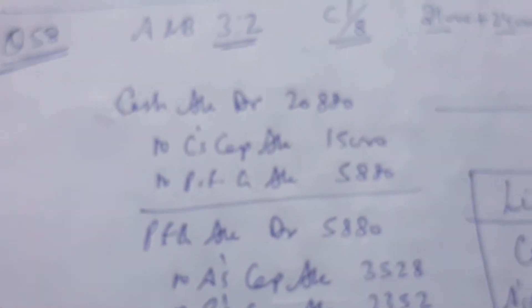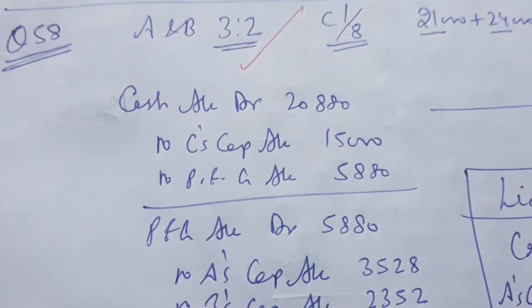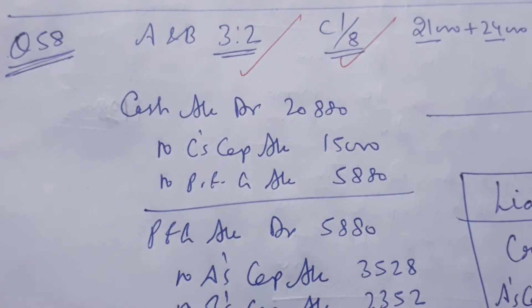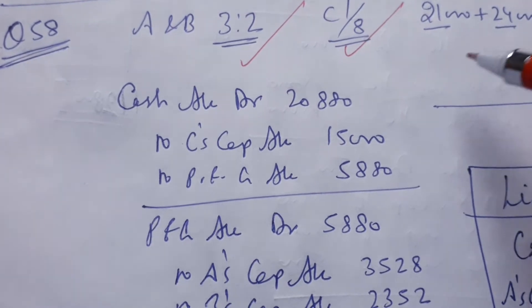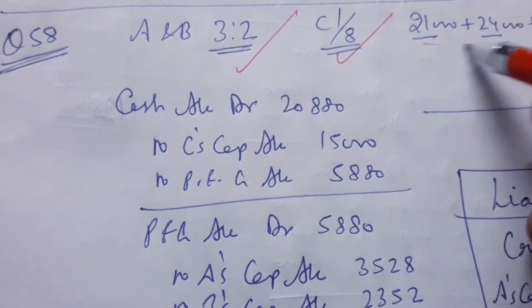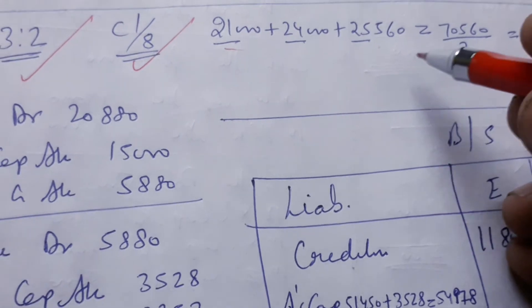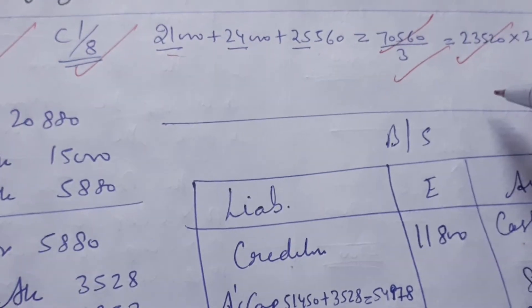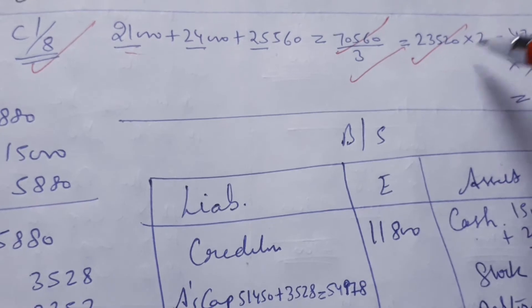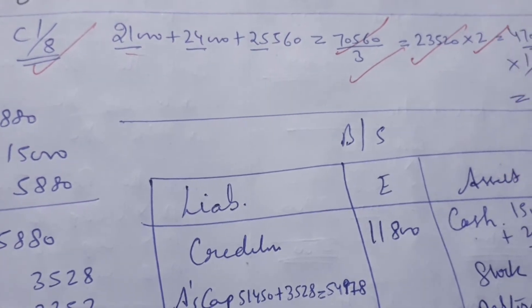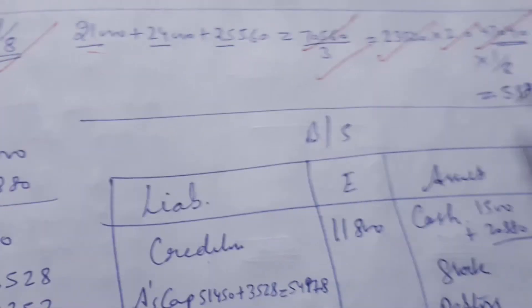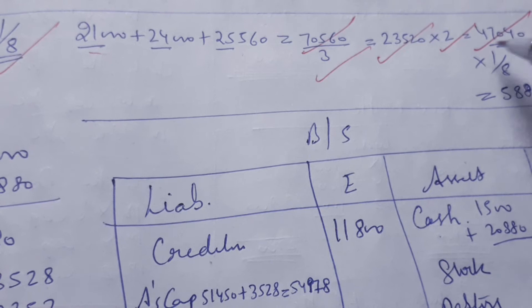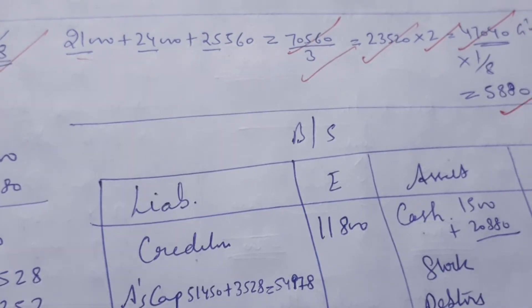Let's talk about Question 58. In question 58, there is a partner for 3 years. The capital is 18,000. The goodwill calculation involves an average of 3 years, giving an average profit of 23,520. The average over 2 years gives 440, which was out of 47,000. The goodwill comes to 1.8 times, which gives 5,880.